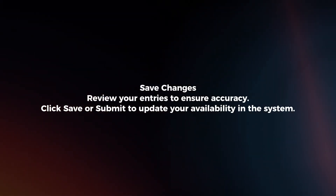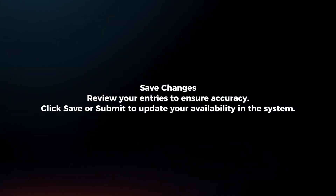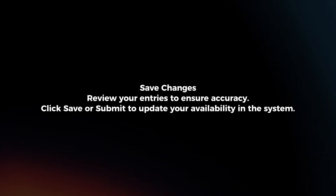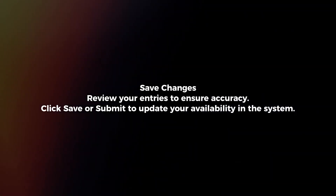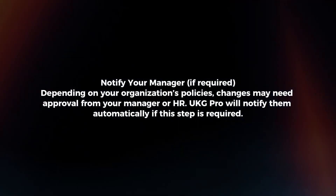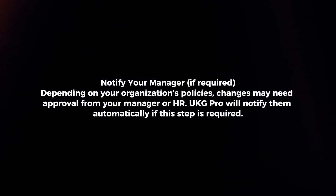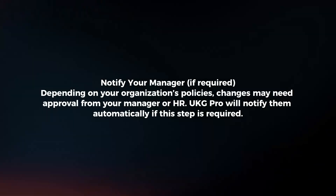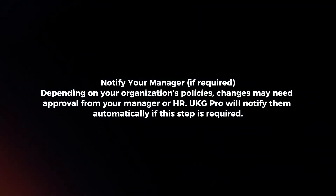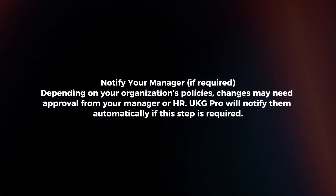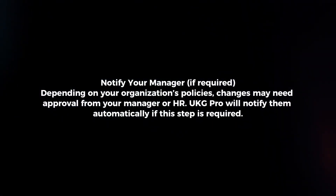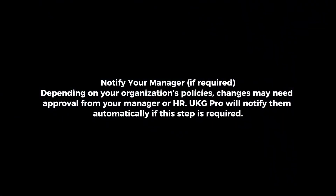Save changes. Review your entries to ensure accuracy, then click Save or Submit to update your availability in the system. Notify your manager — depending on your organization's policies, changes may need approval from your manager or HR. UKG Pro will notify them automatically if this step is required.